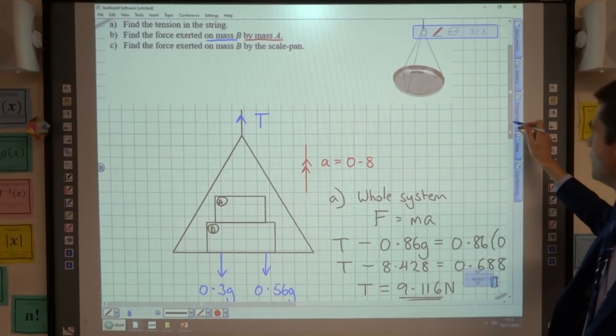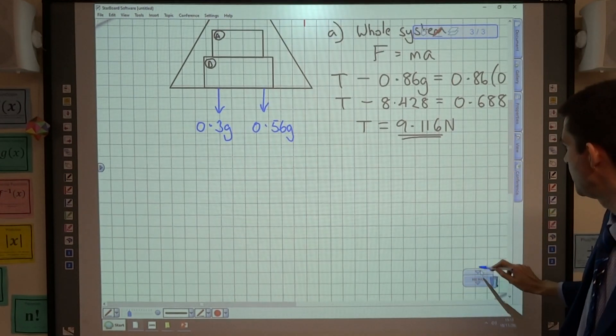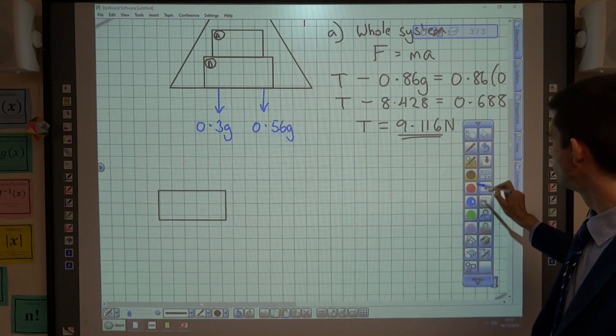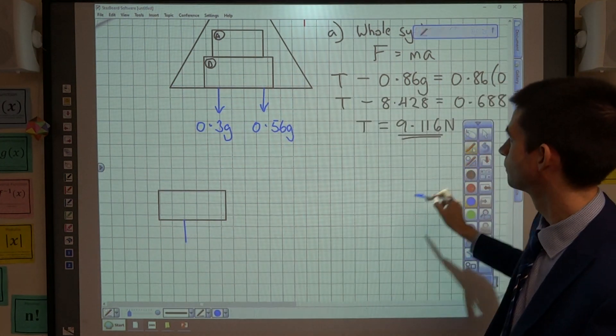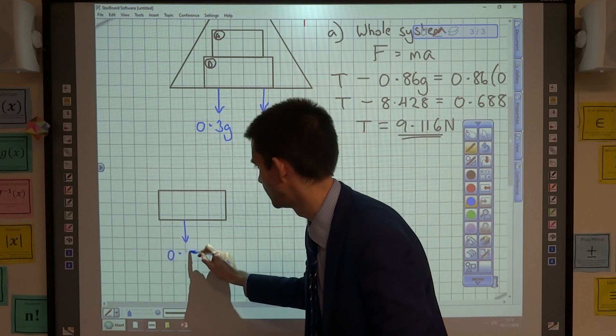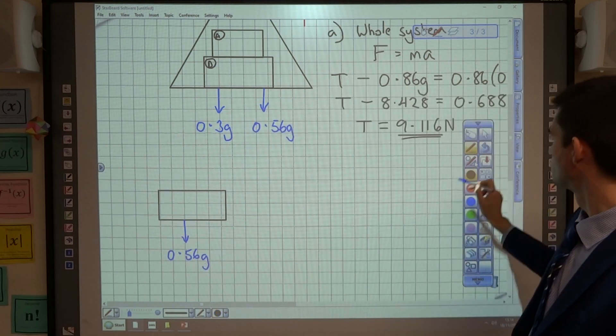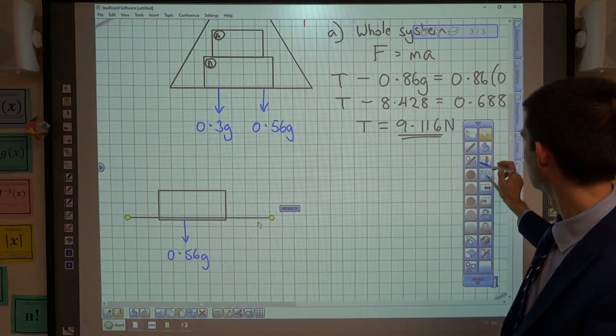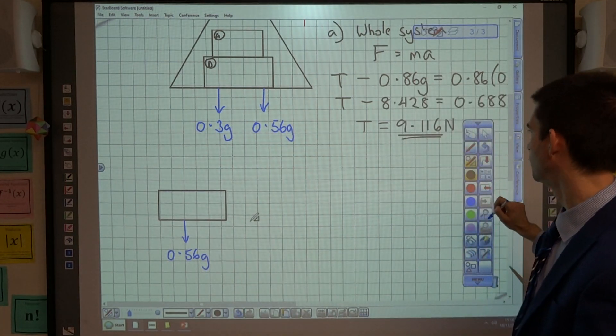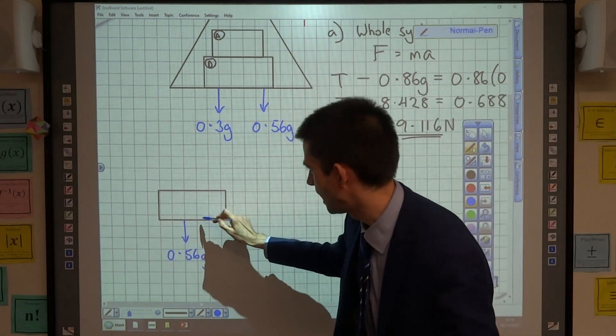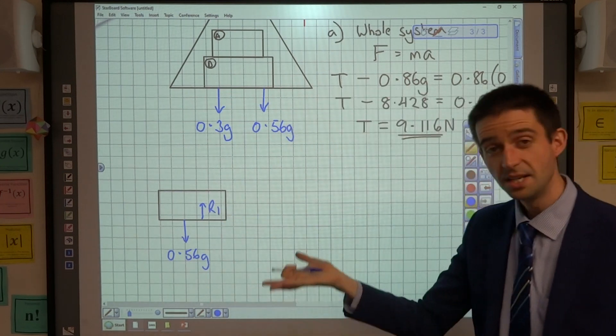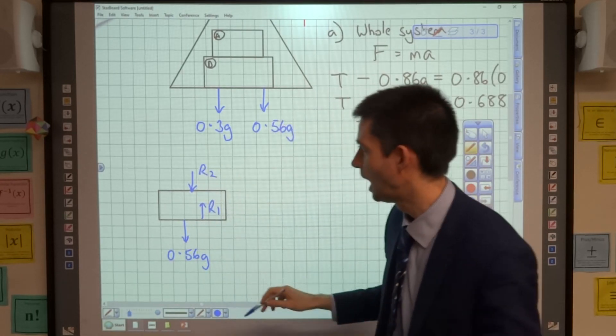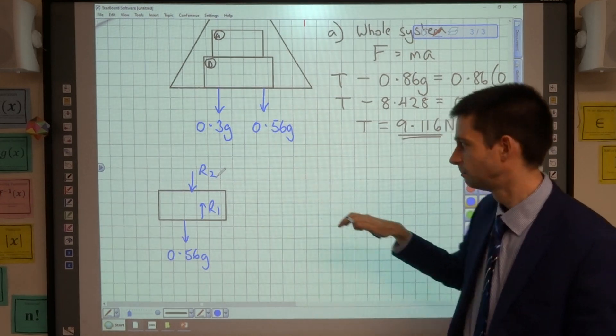So what I'm just going to do is to draw a quick diagram of just mass B. And the forces acting on mass B, well, I've got its weight, which is 0.56 g. I'll just draw in the base of the scale pan here as well, where B is resting. We have a reaction force here, which is raising B. However, we also have a force that A is exerting on B.